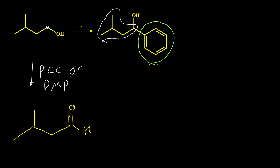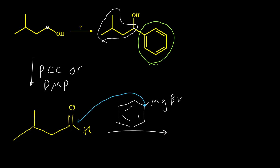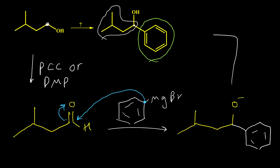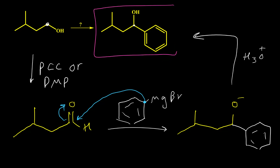Then we get this aldehyde. After that we need to add one benzene ring to this aldehyde, so we need to use a Grignard reagent. If we use a Grignard reagent for the benzene ring, then this negative carbon of the Grignard attacks the carbonyl group and pushes the pi bond onto the oxygen. Then we get this intermediate, and after acidifying this mixture we get our product. So this is the first strategy in this video.